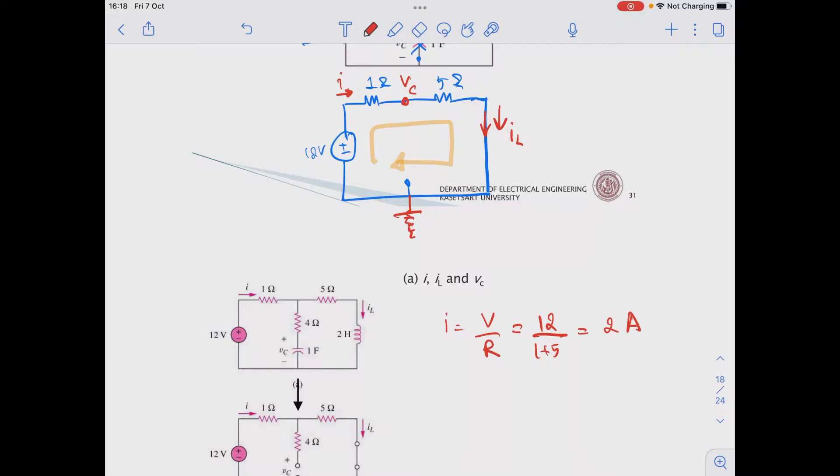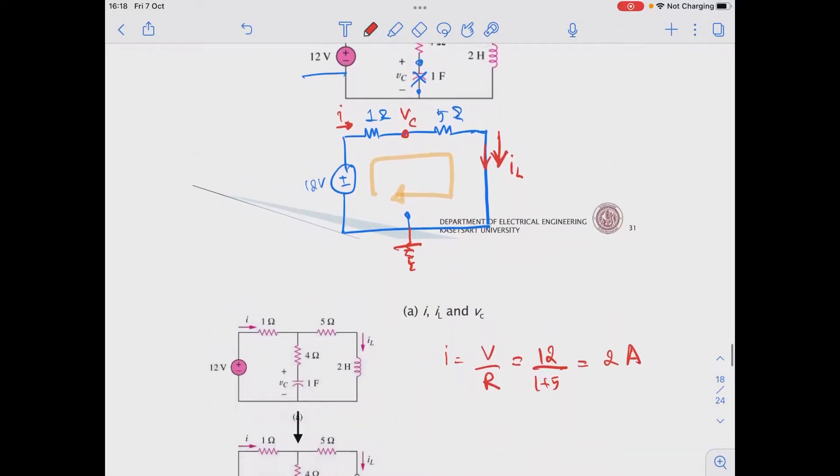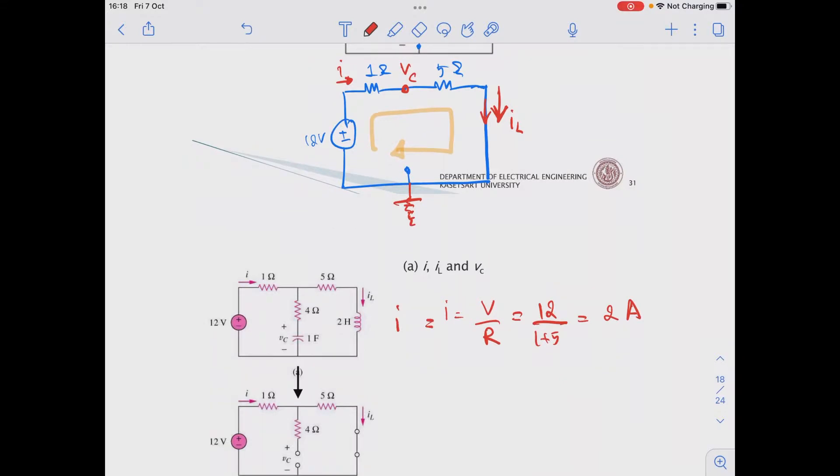And since this one is a single loop, the current passing through this branch, which belongs to the L, the current must be the same. So IL is equal to I and is equal to 2 amperes.